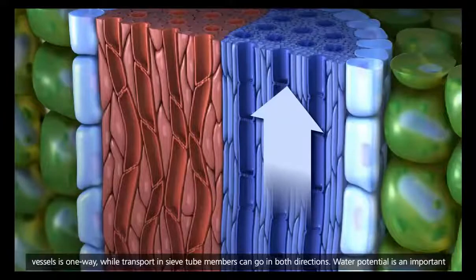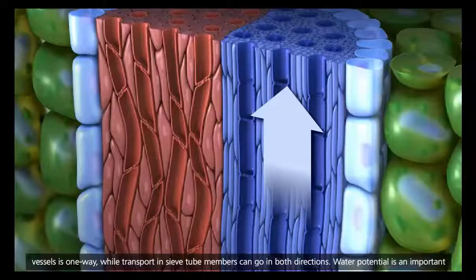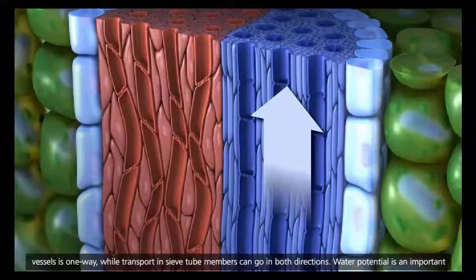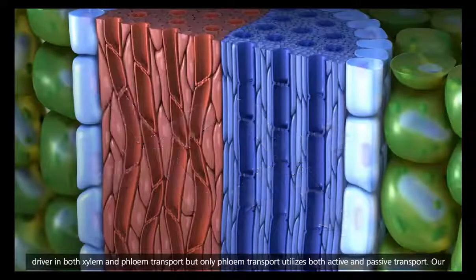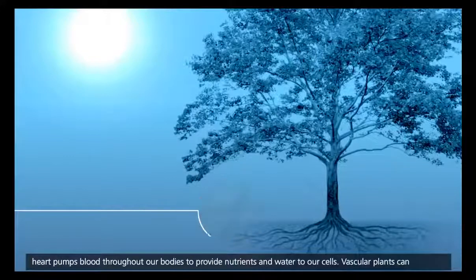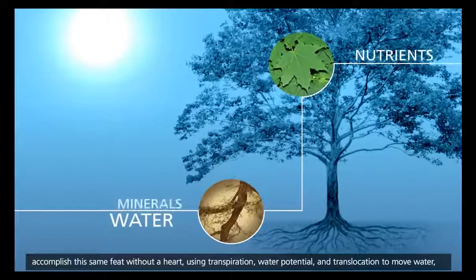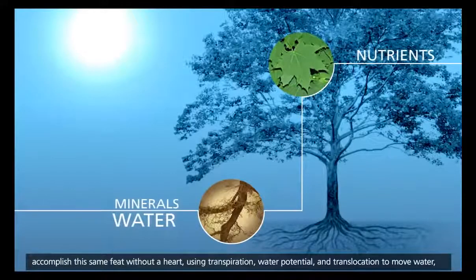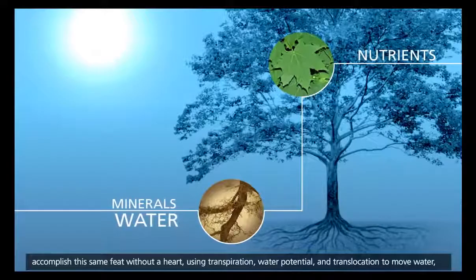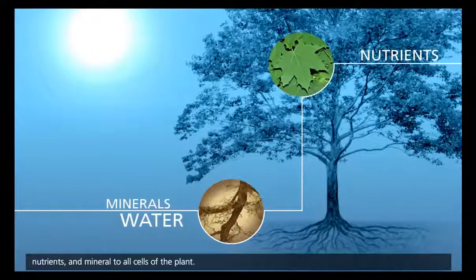Water potential is an important driver in both xylem and phloem transport. But only phloem transport utilizes both active and passive transport. Our heart pumps blood throughout our bodies to provide nutrients and water to our cells. Vascular plants can accomplish this same feat without a heart, using transpiration, water potential, and translocation to move water, nutrients, and minerals to all cells of the plant.